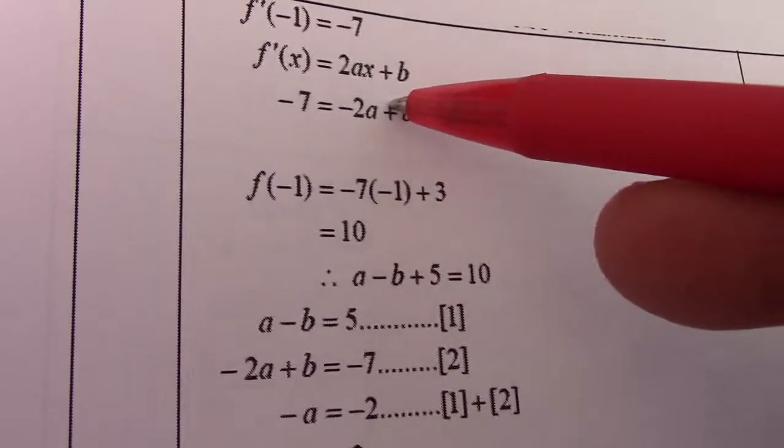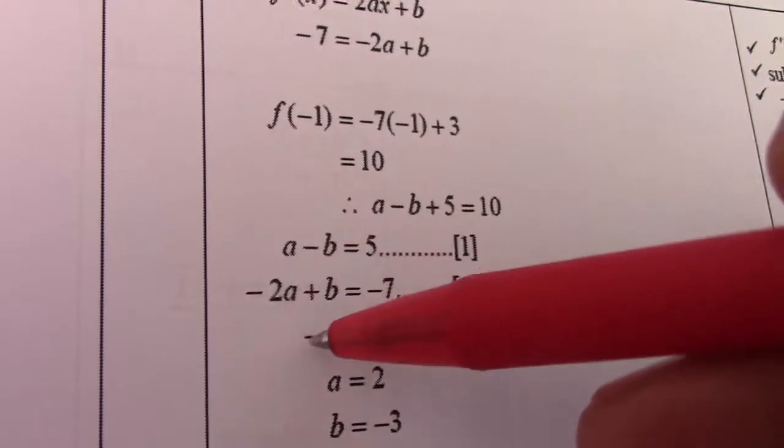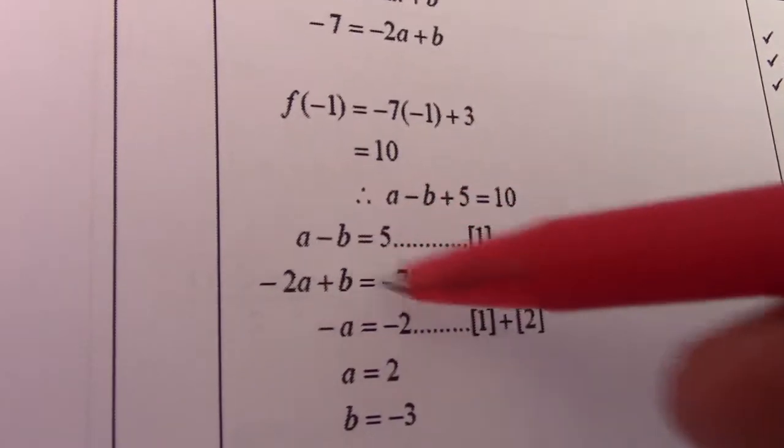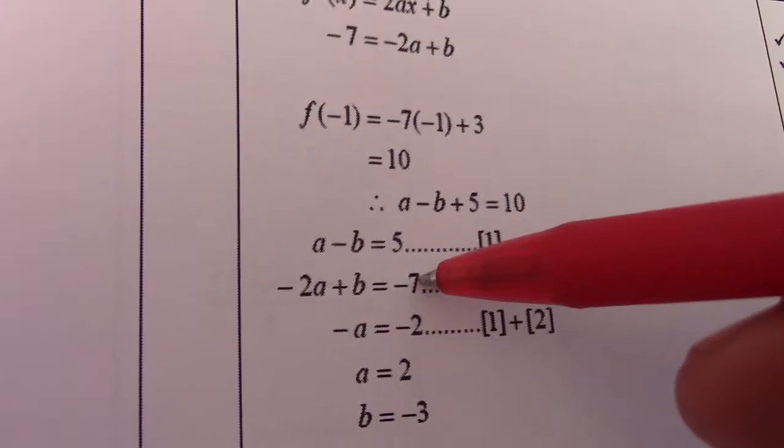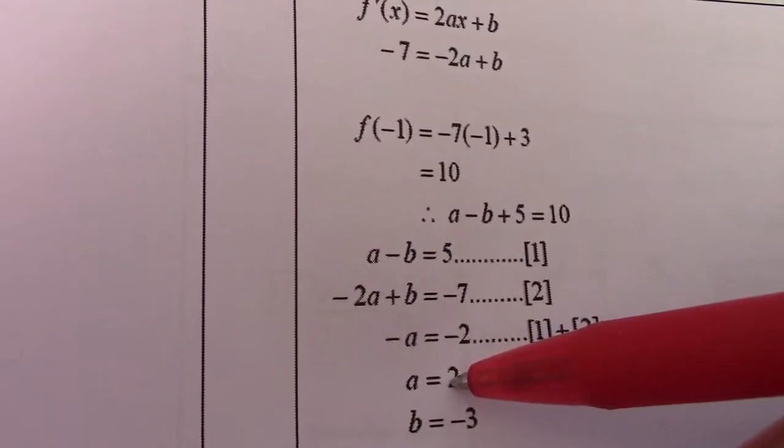Now, two equations. -2a and a. So -2a and a gives me -a. -b and b cancels. 5 minus 7 gives me -2. Multiply by negative: a = 2.